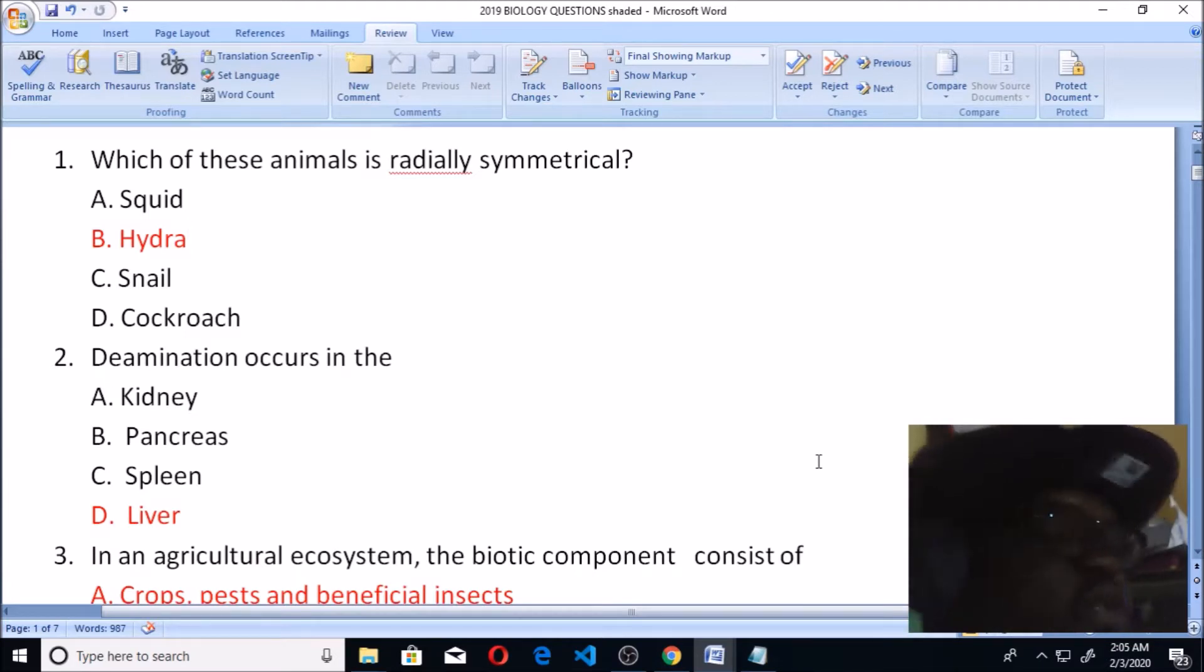But whenever you talk about radially symmetrical, you're talking about animals like the hydra. Hydra is a sea animal, it has a cylindrical shape with a foily kind of body. If you look at the shapes of the cockroach, snail and squid, none of them has this very radially symmetrical shape. So in JAMB you always see questions like metamerically segmented, radially symmetrical and all the rest of them. So the right option here is hydra.